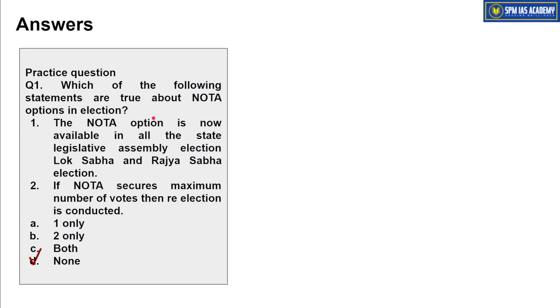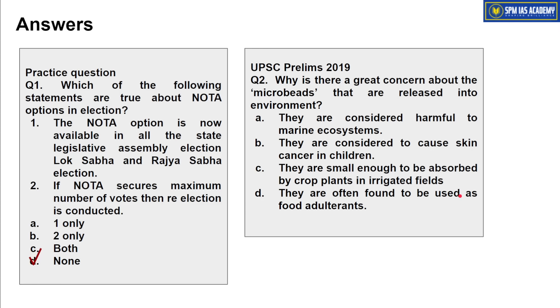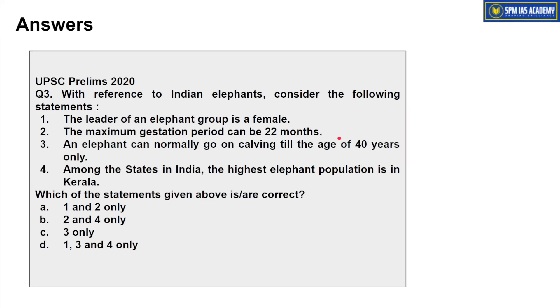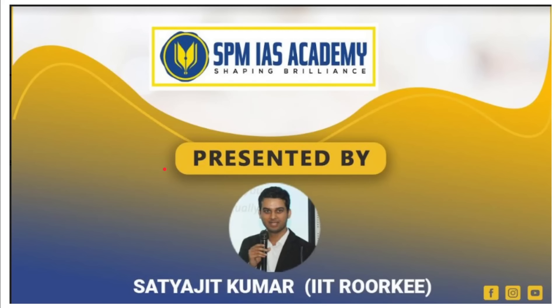Regarding NOTA: both statements are wrong — NOTA is not applicable for Rajya Sabha elections, and even if NOTA secures the maximum votes, there is no re-election. Microbeads are associated with the marine ecosystem. Regarding the Indian Elephant question, the first and second statements are correct while the third is wrong. That's all from our side for today. Thanks for watching.